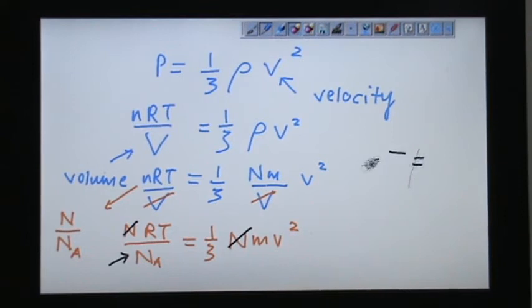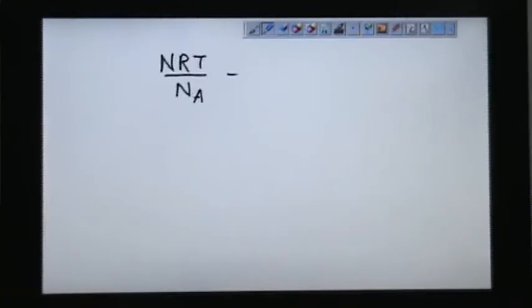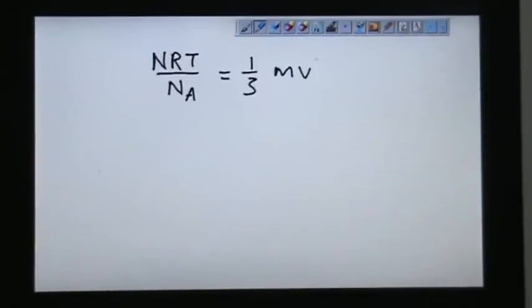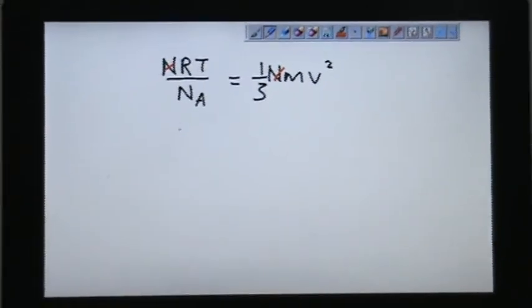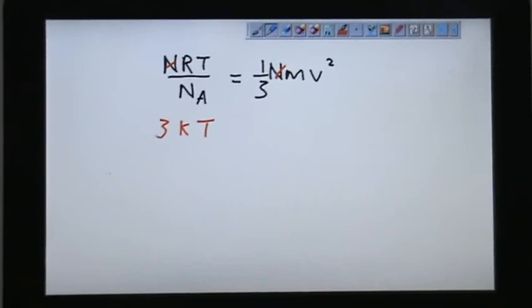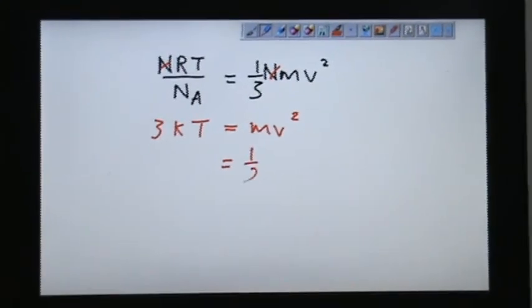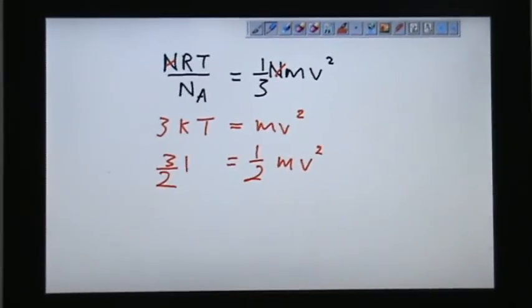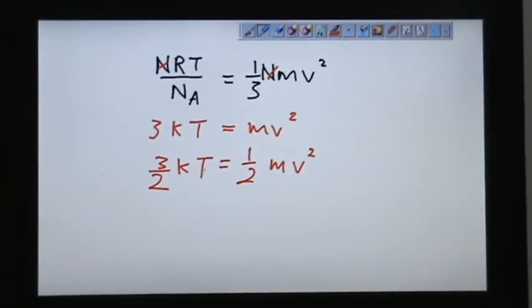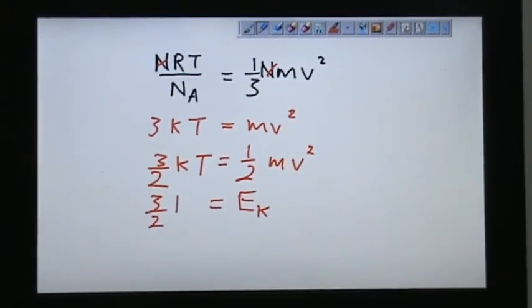3kT equals to mv squared. Let's start a new page to see how this goes about. Just now we were saying that it has nRT over NA, 1 over 3, mv squared. So we eliminate this n, and R over NA is k, and 3 bring up, so I have mv squared. But I want an expression for kinetic energy, so it's half mv squared. I put a divide by 2 on the right-hand side, so I should do the same for the left-hand side. Divide by 2.